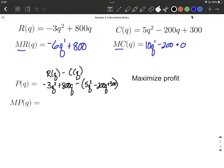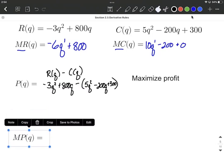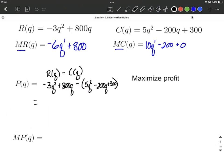Now let's go ahead and clean this up a little bit before we actually take its derivative to get the marginal profit. So cleaning it up, what I mean by that is I'm going to go ahead and distribute that negative to each one of these terms that are inside my parentheses. So negative 5q squared plus 200q minus 300.